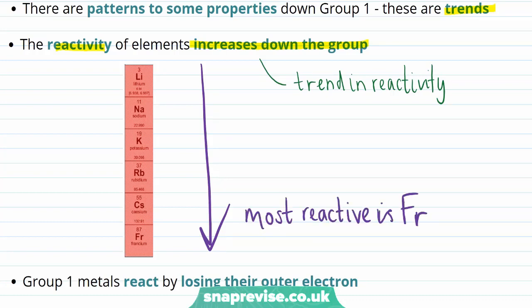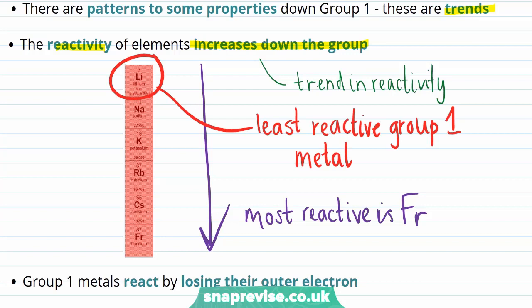Similarly, caesium is slightly less reactive than francium, rubidium slightly less reactive than caesium, and so on. We can conclude that lithium is the least reactive Group 1 metal, just from knowledge of this trend and the order that the elements appear in the periodic table. So how can we explain this?